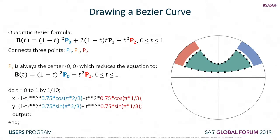Drawing Bezier curves is a little more complicated. There are multiple polynomial levels—linear, quadratic, cubic, quartic—depending on how many control points you need. I use a starting point p0, a midpoint p1, and an endpoint p2, so I use the quadratic Bezier formula: (1−t)² × p0 + 2(1−t)t × p1 + t² × p2, going from t=0 to t=1. Fortunately, in our situation p1 is always the center of the circle at 0,0, so we can simplify the formula to (1−t)² × p0 + t² × p2, applied to both x and y coordinates.